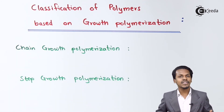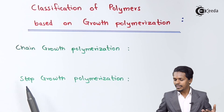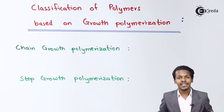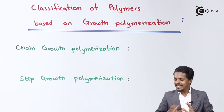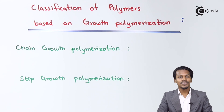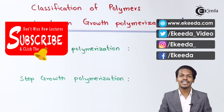For example, chain growth polymerization gives us Teflon and polyethylene. For step growth polymerization, examples include nylon 6 and polyester. Thank you friends for watching this video. I hope you have understood it clearly, and I hope to see you next time. Don't forget to subscribe to the channel.